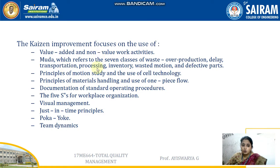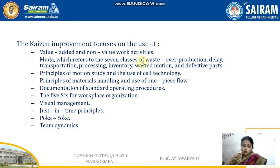Continuing the seven wastes: processing, where the process may be very poor; inventory, which is organic waste; wasted motion; and defective parts. These are the different kinds of waste you can find whenever you deliver a product — that product may be very poor or may have many types of Muda, which are the different types of waste occurring in a company.